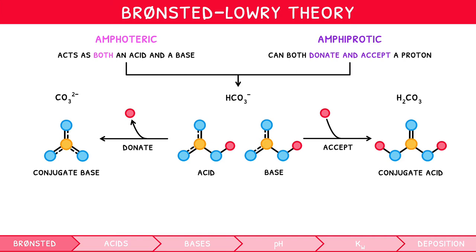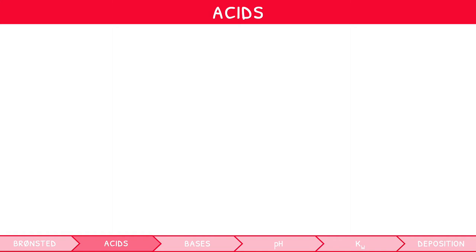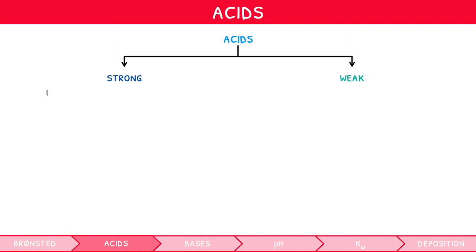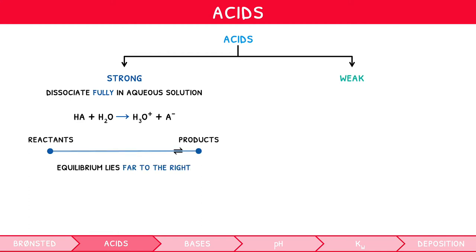So, we've defined acids and bases, but you need some more information on each. Let's look at acids. Acids can be classified as either strong or weak. Strong acids dissociate fully in aqueous solution, so reviewing the equation we created earlier, we can replace the reversible arrow with a single arrow. This indicates that the position of equilibrium lies so far to the right that the reaction is essentially considered non-reversible. Strong acids are therefore considered to have a weak conjugate base, as it will not readily pick up protons to reform the acid. Common strong acids include HCl, H2SO4, and HNO3.